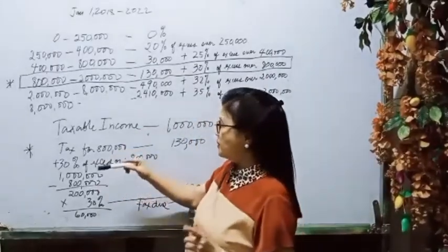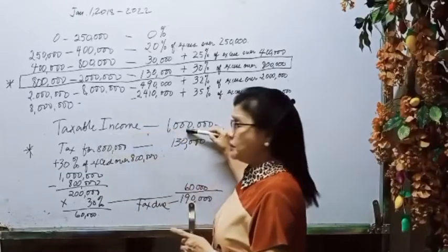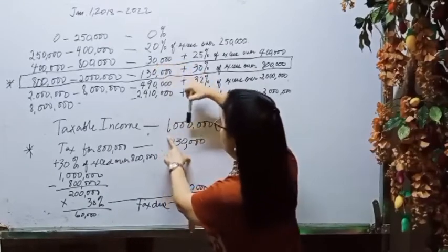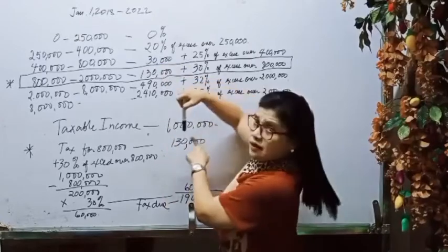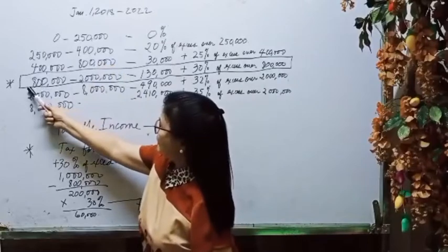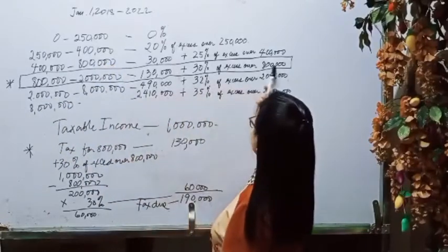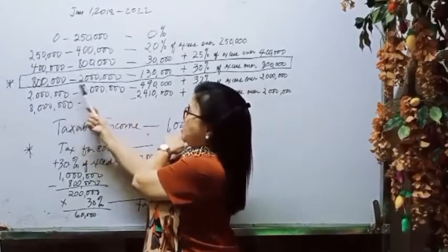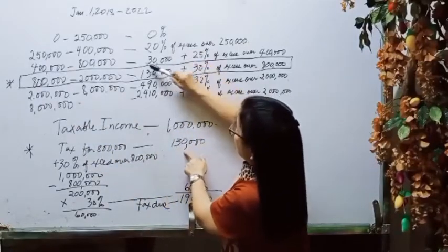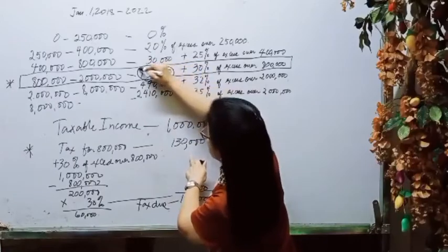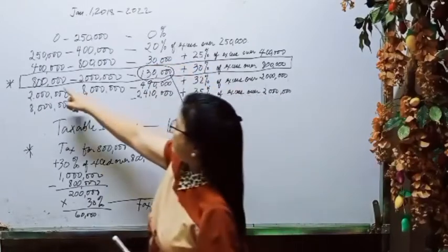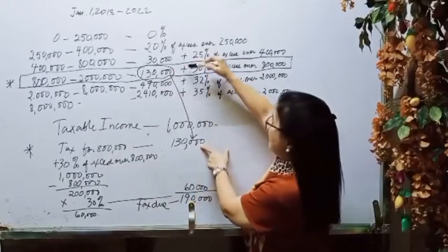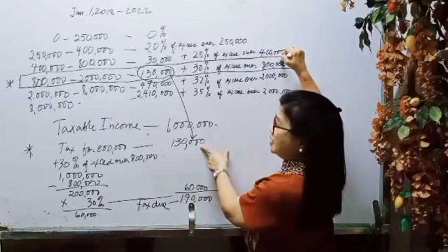For example, the compensation income and the taxable income is 1 million. In order to find the tax due of 1 million, we look into our tax table — where does 1 million fall? It falls on the level of 800,000 to 2 million. So the tax for 800,000 is 130,000 plus 30% of excess over 800,000.